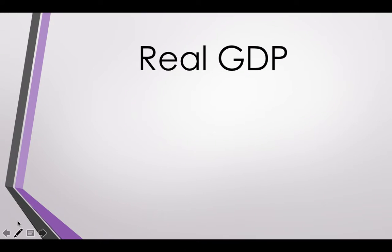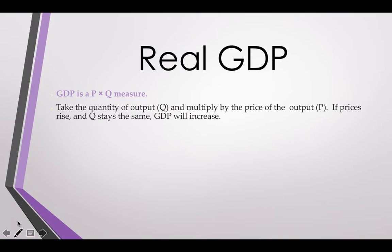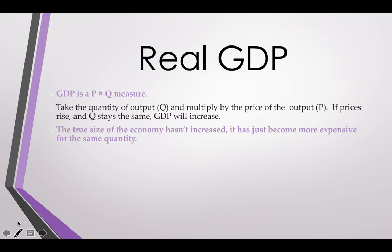To calculate GDP, we multiply price by quantity — how much things cost times the amount sold — and that gives us our GDP. We need to be careful, though, because if the number is greater, is it greater because prices went up, or because we had more output? What we're concerned with is whether there was more output. If things have gone up only because of prices, that means the economy hasn't really grown — there's been no increase in output.